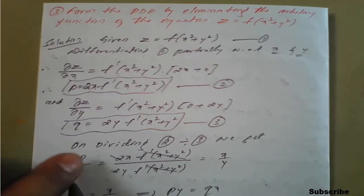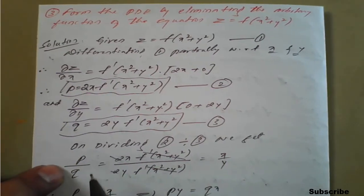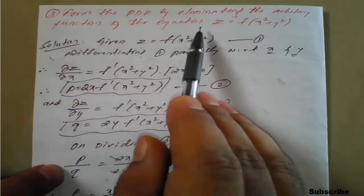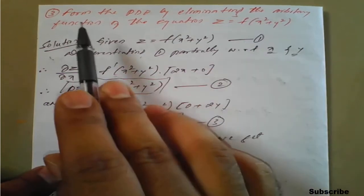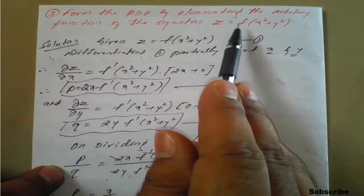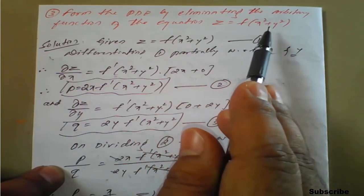Few more examples based on partial differential equations for the given function. I have taken the next question: form the PDE by eliminating the arbitrary function of the equation z equals f of x square plus y square.